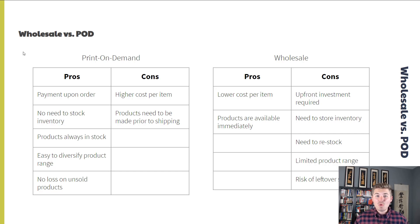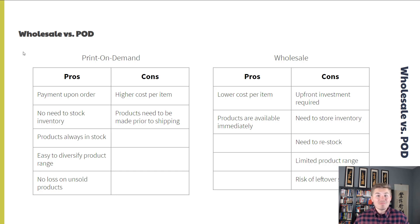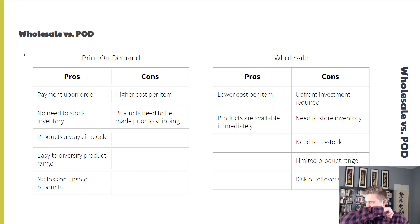Now let's flip to wholesale. The pros: it's a lower cost per item, so you pay less for every item sold on your online store. Also, products are available immediately — if someone places an order, you can take the product off your shelf and ship it out without the printing process. However, there are some hefty cons. Number one, there's an upfront investment required in your initial inventory. Without inventory, you have nothing to sell, and that initial investment could be pretty hefty.